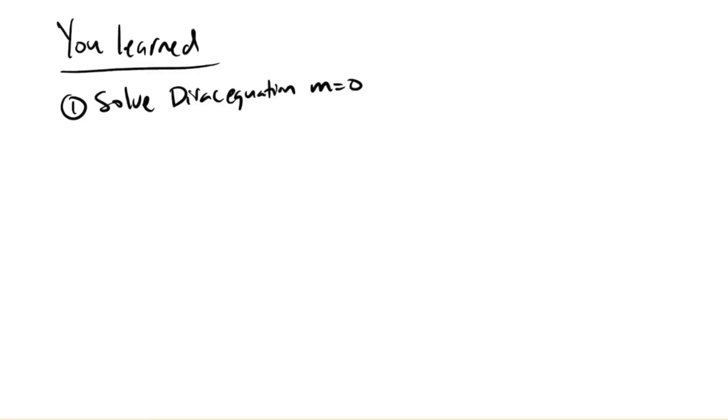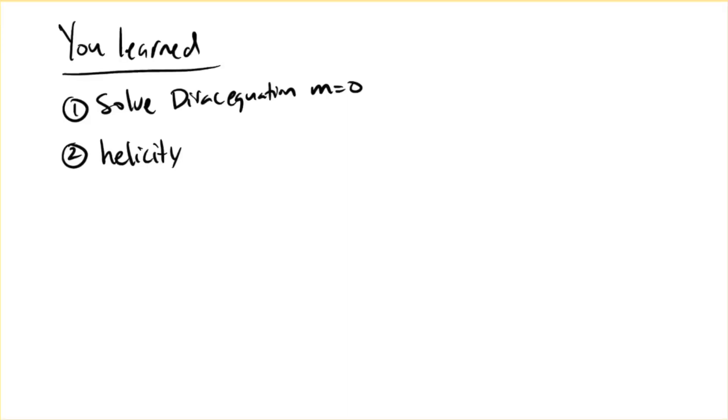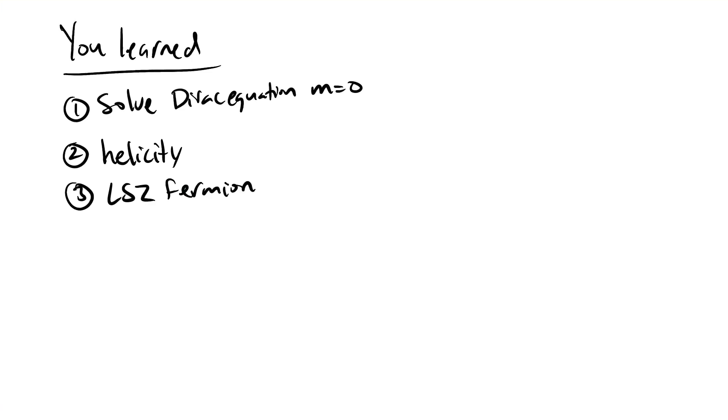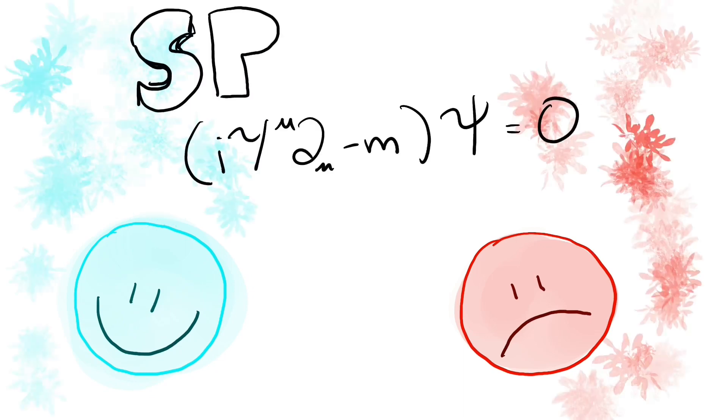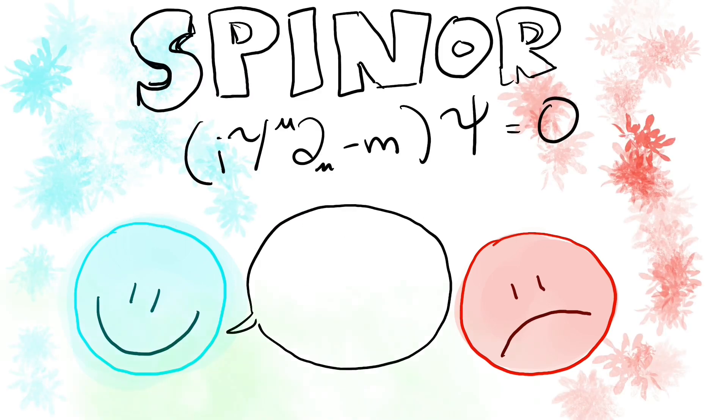In today's video, we learned how to solve the massless Dirac equations and interpreted the helicity solutions of antiparticles. We also derived the LSZ formula for fermions. In the next video, we will be describing how spinor particles and scalar particles interact. Thanks for watching!